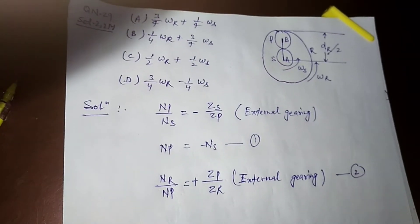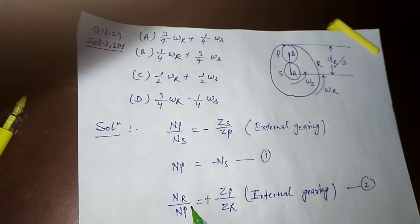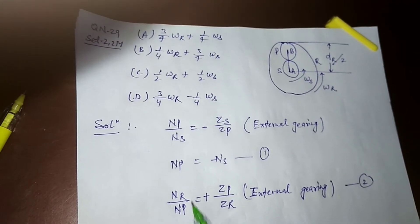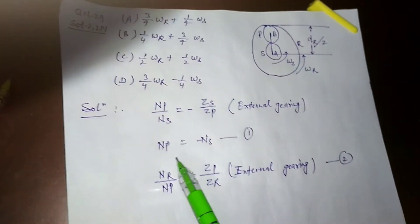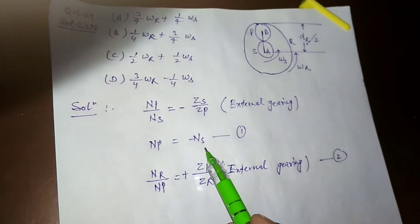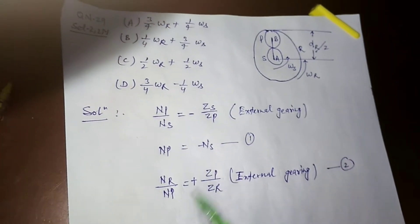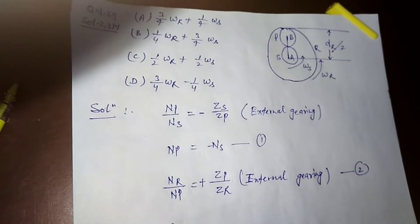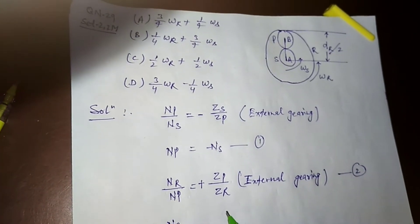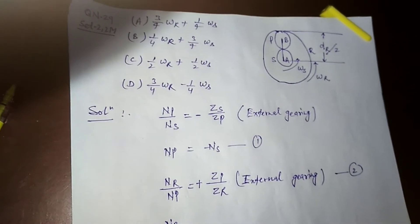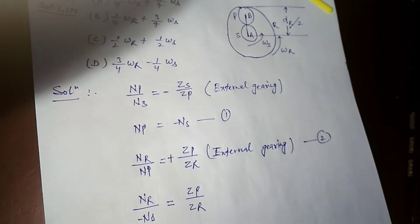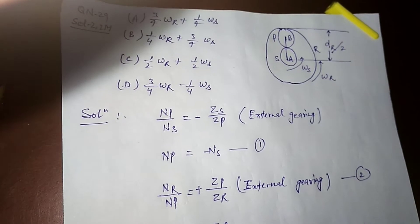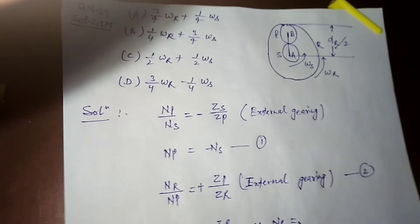From equation 2, NR/NP = Zp/Zr. Since NP = NS, we can write NR = (Zp/Zr) × NS. This is equation 3. We still need the relation between Zp and Zr.